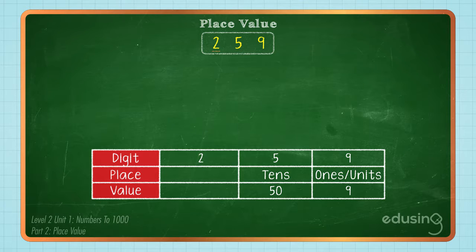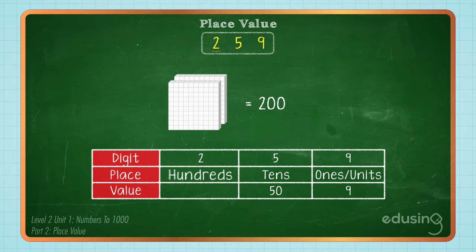The digit 2 represents the number of groups of 100 cubes. It is in the hundreds place and has a value of 200.